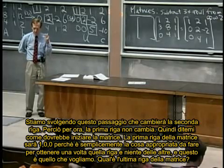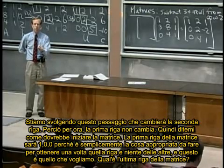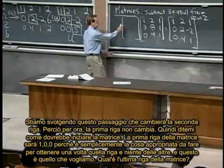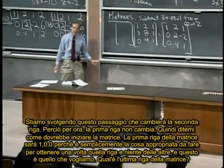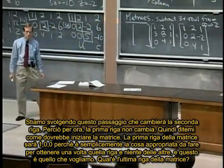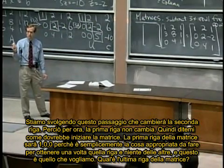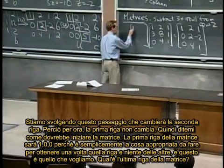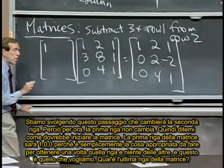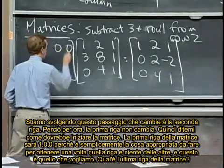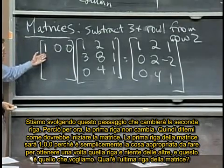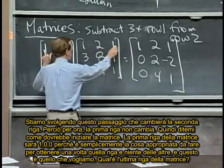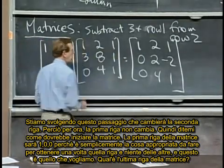We're just doing this step that changes row two. So actually, row one is not changing. So tell me how the matrix should begin. One, so the first row of the matrix will be one, zero, zero. Because that's just the right thing, that takes one of that row and none of the other rows, and that's what we want.